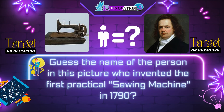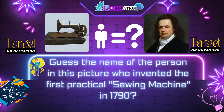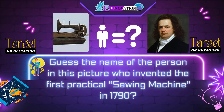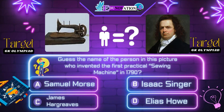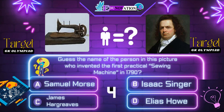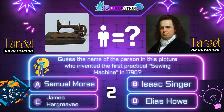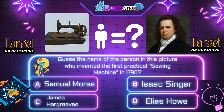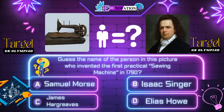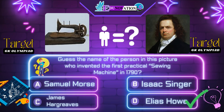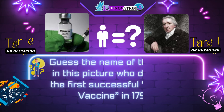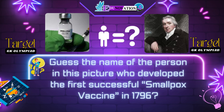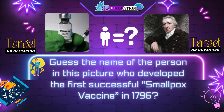Now next question. Guess the name of the person in this picture who invented the first practical sewing machine in 1790. Your options are: A. Samuel Morse, B. Isaac Singer, C. James Hargreaves, D. Elias Howe. Time's up. Correct answer is D. Elias Howe.